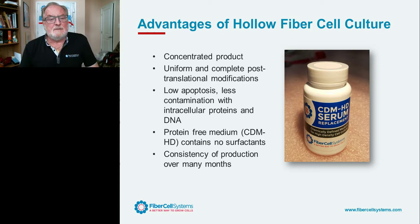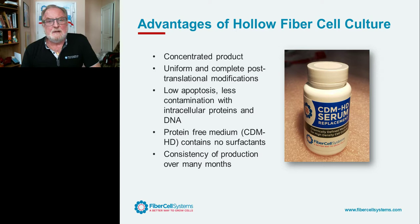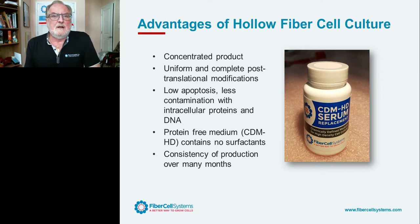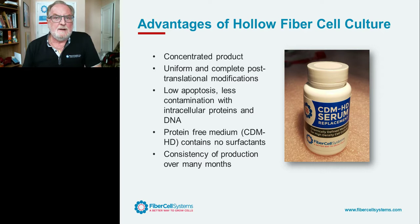The fundamental advantages of hollow fiber cell culture include a concentrated product. Cells at very high density produce a secreted product 10 to 100 times more concentrated than in flask or spinner culture. Because cells are at in vivo-like density and generate their own microenvironment, they spend much more time at their optimum homeostatic conditions. This enables uniform and complete post-translational modifications over several months of continuous production. For EVs and exosomes, cell culture conditions play a key role in EV production and activity.